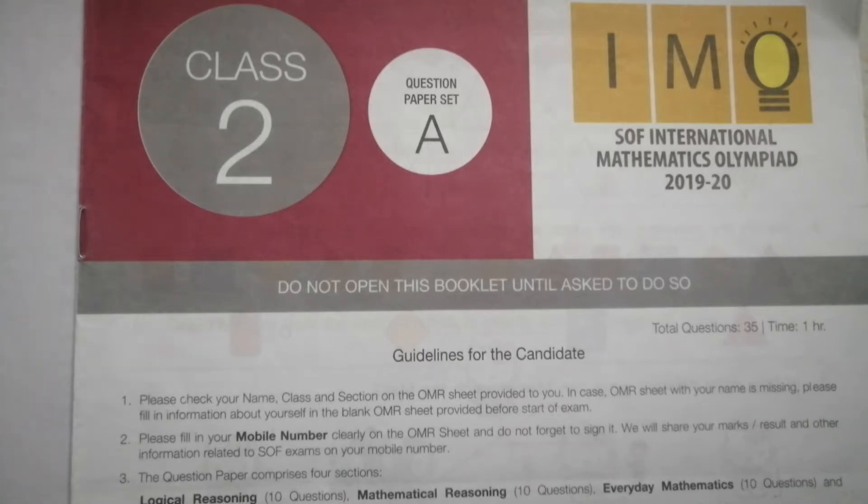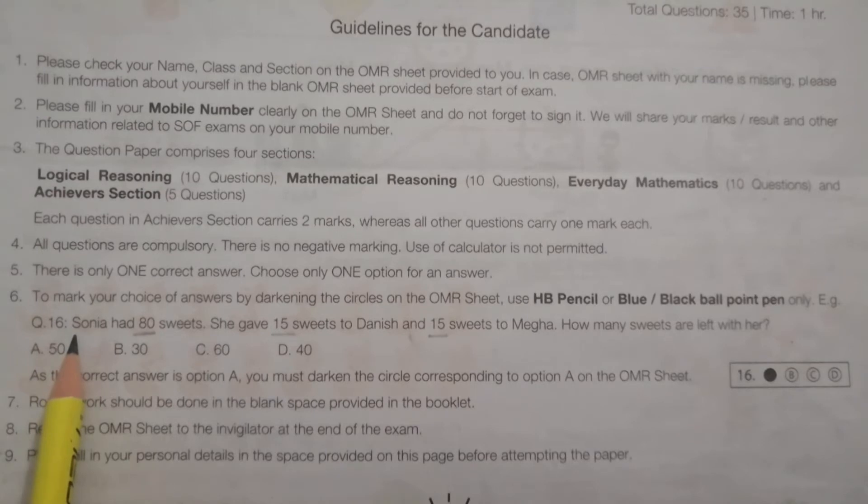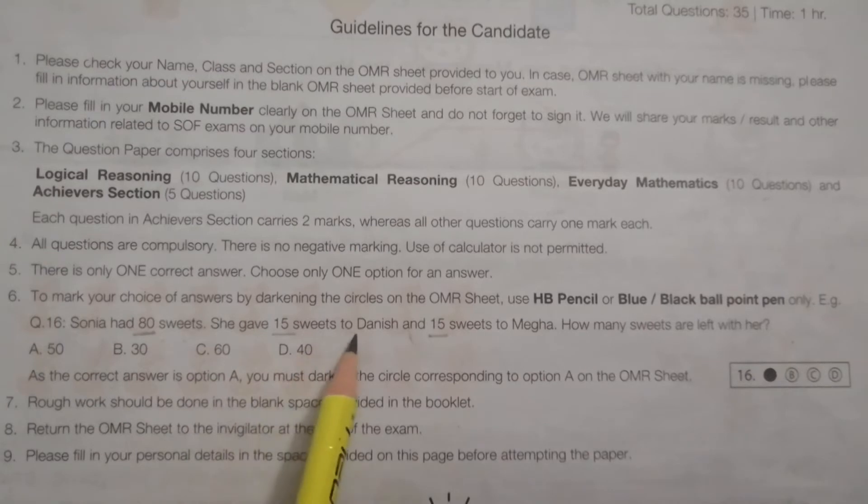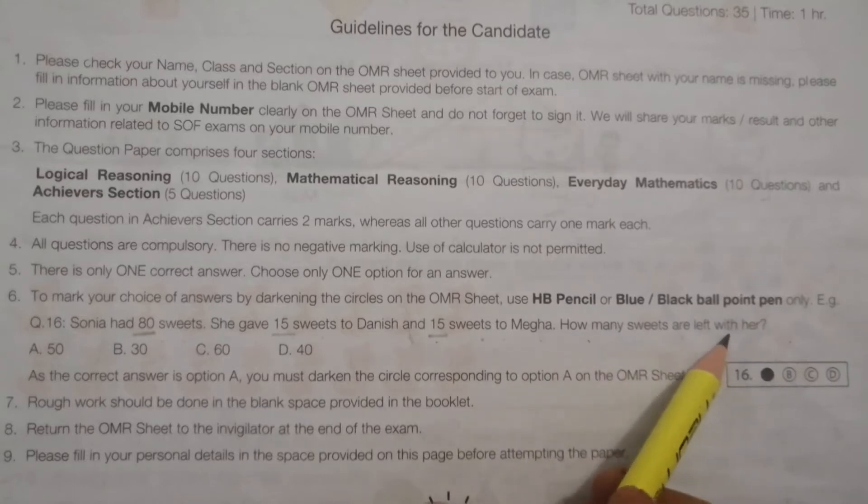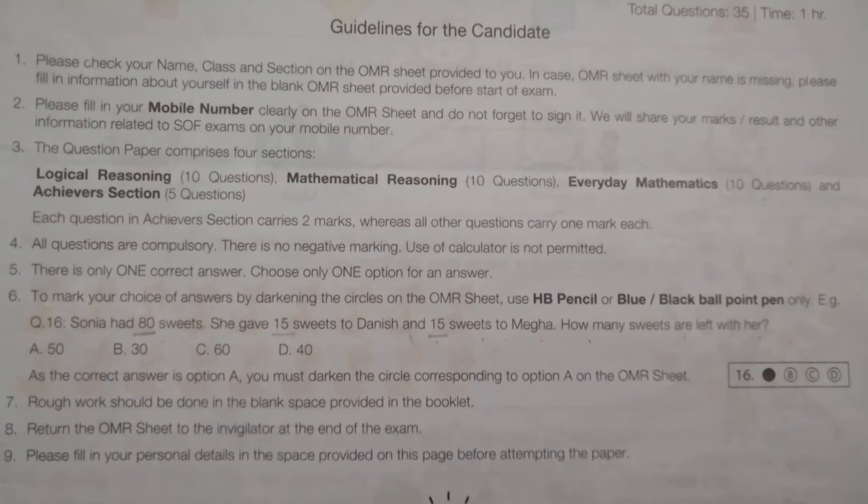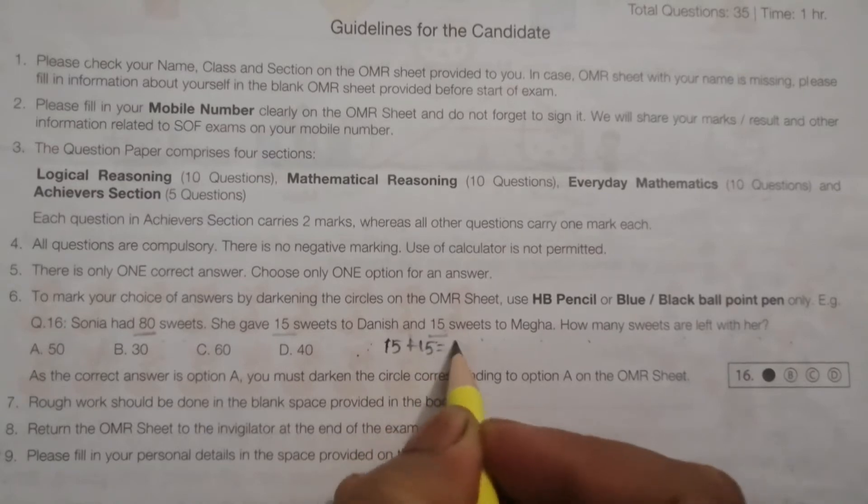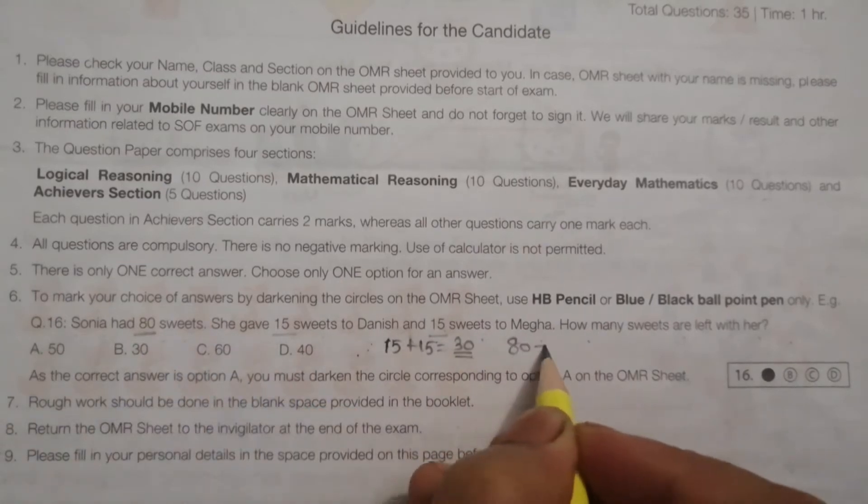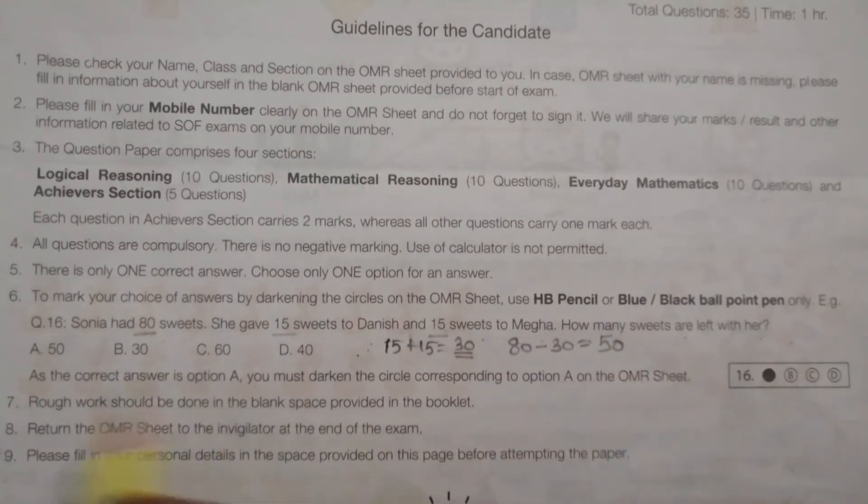Today we are going to discuss the 2019 IMO question paper for class 2 students. This is the model question given in your question paper: Sonia had 80 sweets. She gave 15 sweets to Danish and 15 sweets to Mega. How many sweets are left with her? So first we add 15 plus 15 equal to 30. Then we subtract 30 from 80. 80 minus 30 equals 50. So the answer is 50.